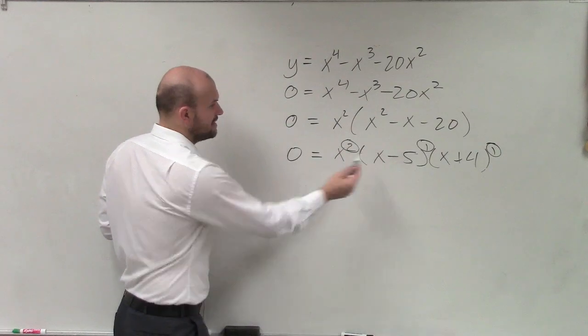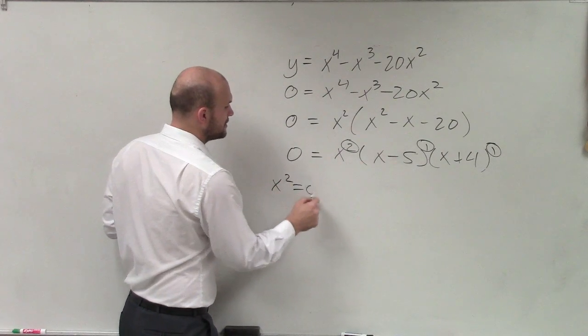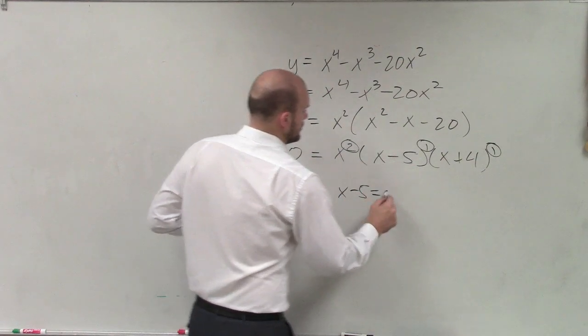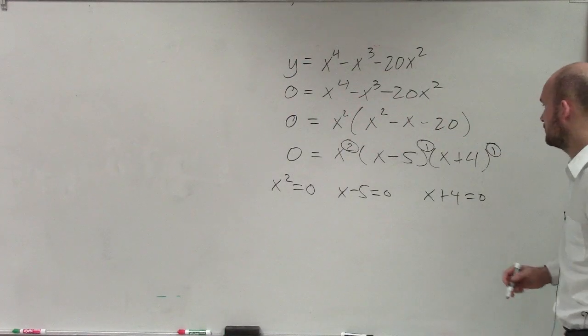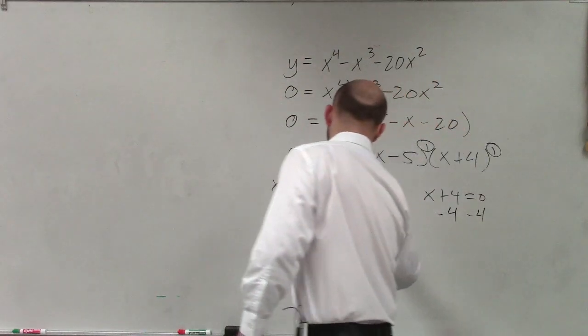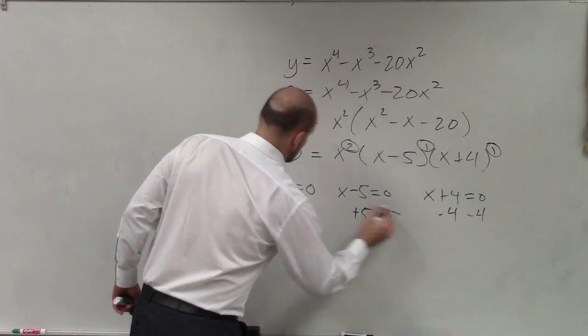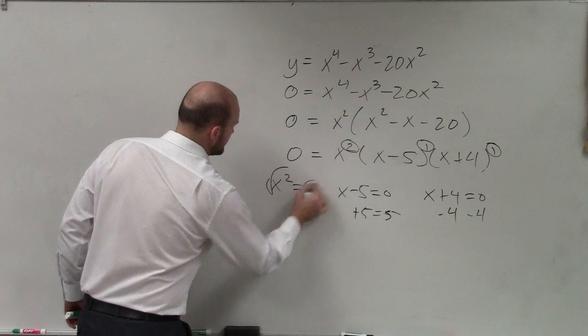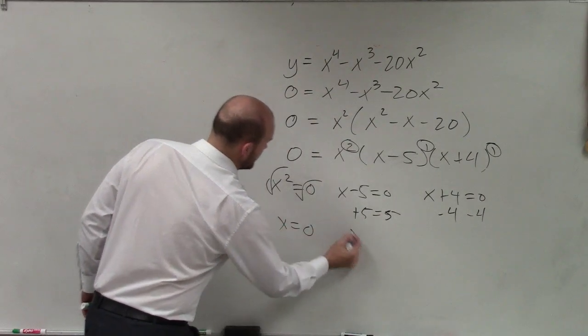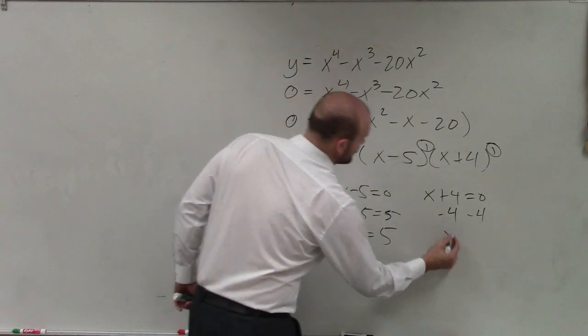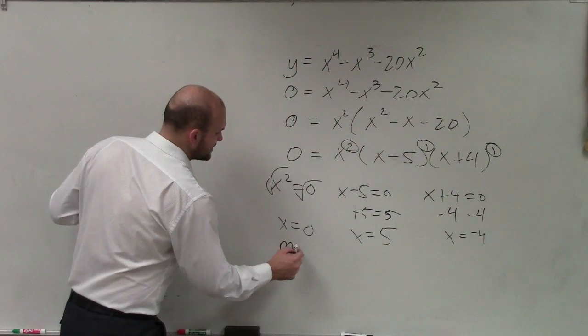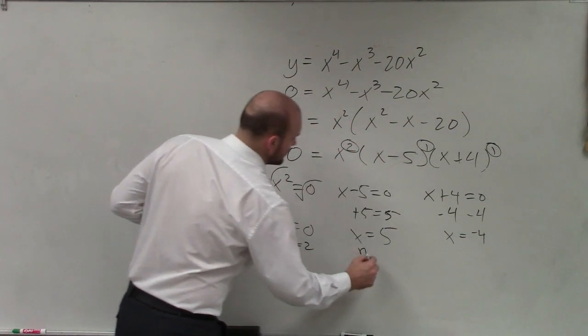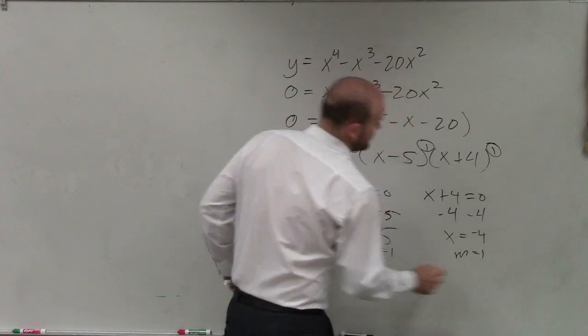When solving this, we can use the zero product property. Set each factor equal to 0 and solve. This gives x = 0 with multiplicity 2, x = 5 with multiplicity 1, and x = -4 with multiplicity 1.